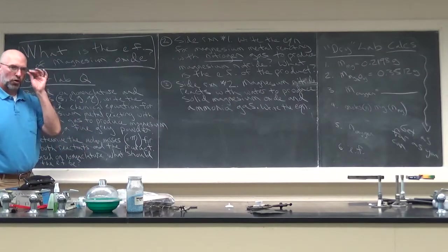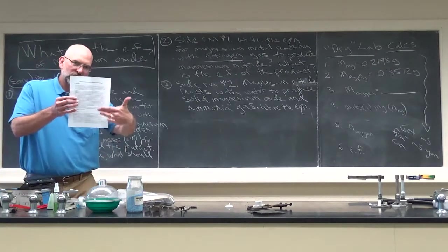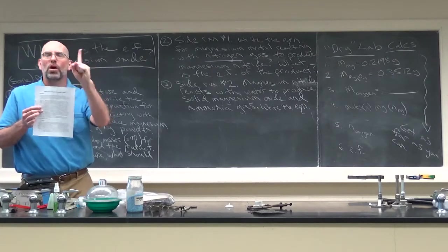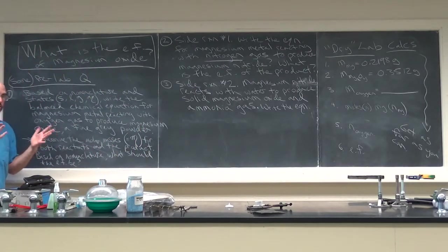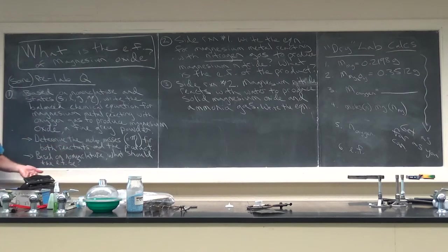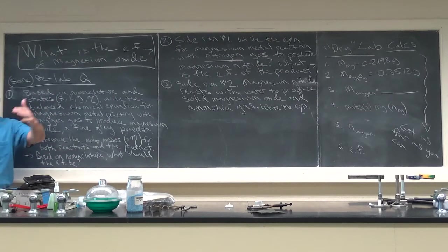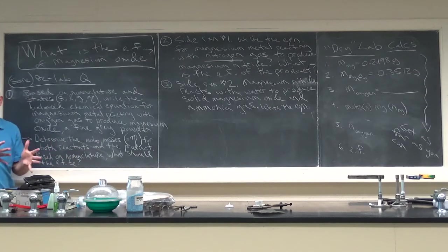There's a whole bunch of stuff we can do before we come to the lab. Some of your pre-lab questions involve taking what's in the introduction and turning it into a chemical equation. There are actually three chemical reactions taking place today, but we only care about one for the calculations. The first one: using what you know about nomenclature and states of matter, write the balanced chemical equation for magnesium metal reacting with oxygen gas to produce magnesium oxide, which is a fine-grade powder. Magnesium oxide - based on nomenclature, what should that chemical formula be?